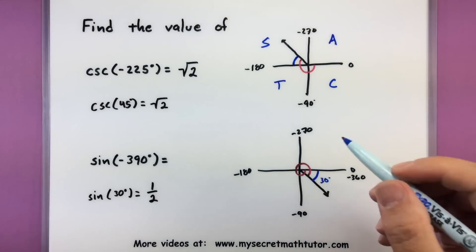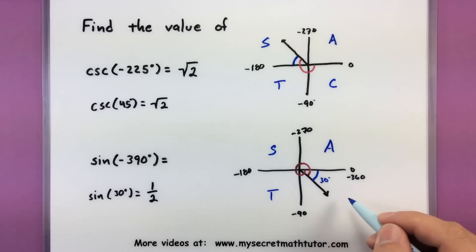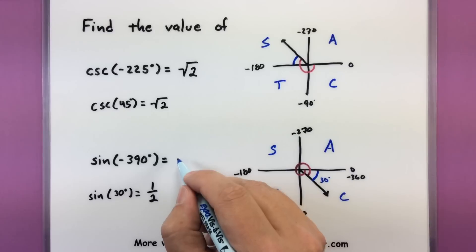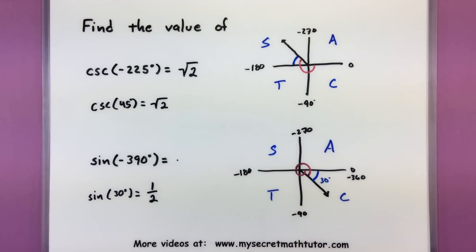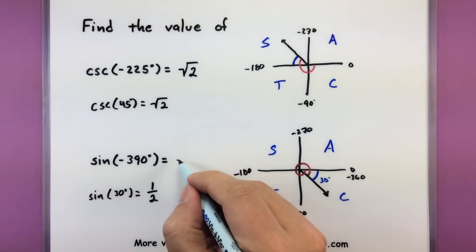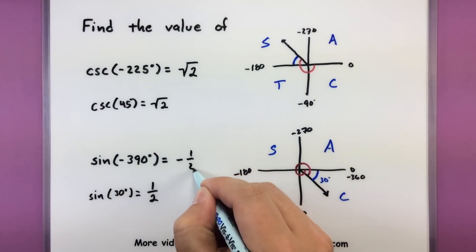We are in quadrant number four. Cosine and its reciprocal are the positive functions. We're dealing with sine, so it's not either one of those. So we know that our function has to be a negative one half. And there you go.